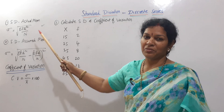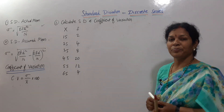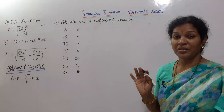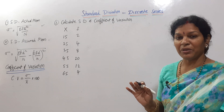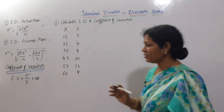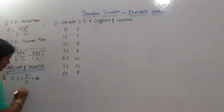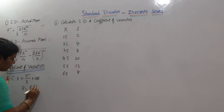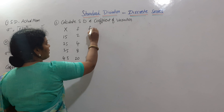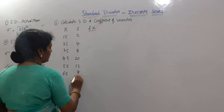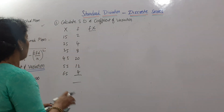First we need to calculate the arithmetic mean x-bar. The formula for x-bar in discrete series is x-bar equals sigma f·x divided by n. We have to calculate f·x for each value, and n is the total frequency.